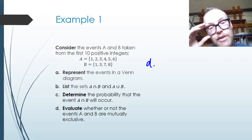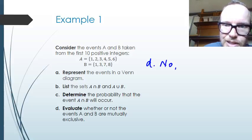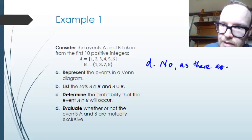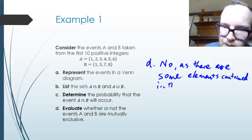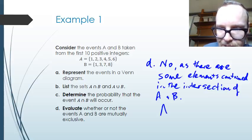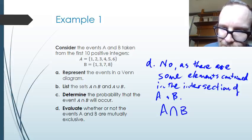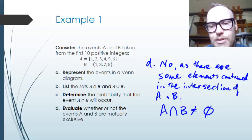For part D, we're asked to evaluate whether events A and B are mutually exclusive. We can say no, they are not mutually exclusive, as there are some elements contained in the intersection of A and B. To write this mathematically, the intersection of A and B is not the null set — meaning the two events are not mutually exclusive.